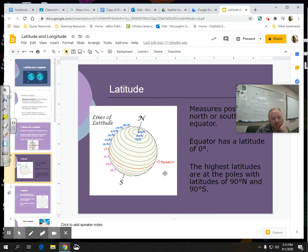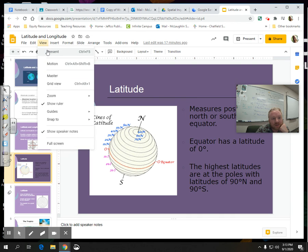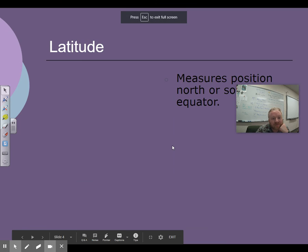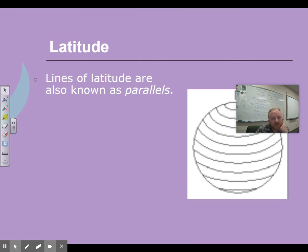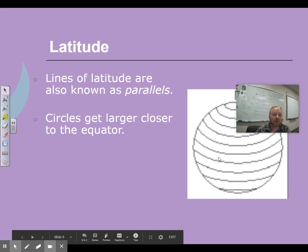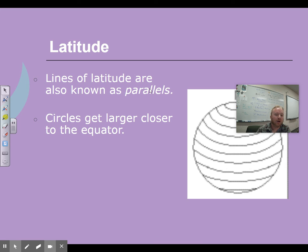The highest latitudes are at the poles with latitudes of 90 degrees north and south — 90 degrees as well. Those are the lines of latitude — 'fatitude.' Lines of latitude are also known as parallels — you might know that from math. Parallels never intersect. The circles get larger the closer you go to the equator.